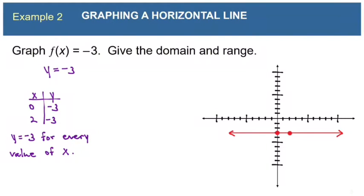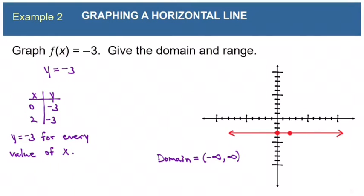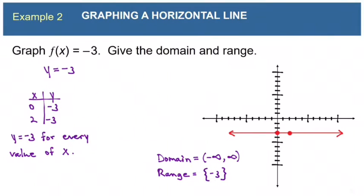For the domain, from furthest left to furthest right, the domain is negative infinity to positive infinity. But the range — all y values from lowest to highest — is just the single number negative 3, since y is always negative 3. We don't need interval notation; we write the range in curly braces as {-3}, because we're talking about just one number, not an interval.